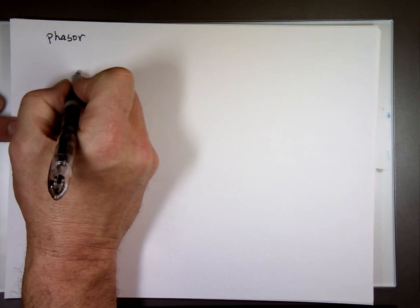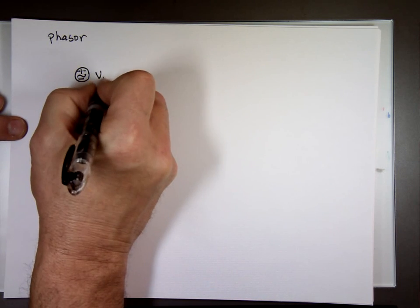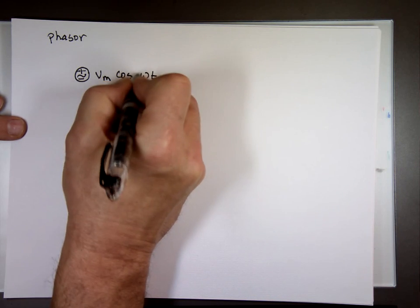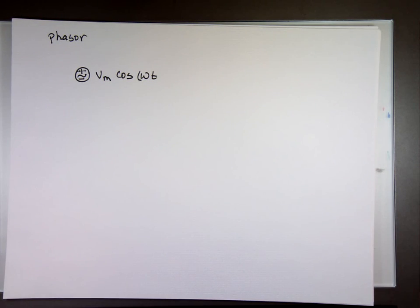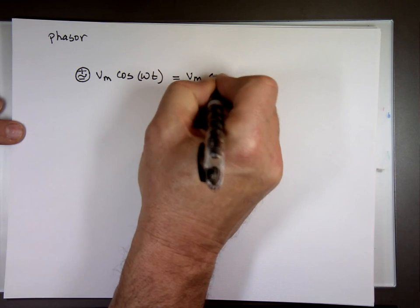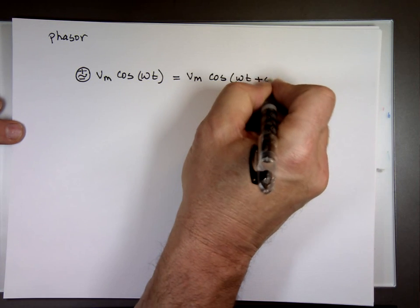As I said, phasor is a nice way to solve a circuit problem that has a sine or cosine for a source. So if my source is, for example, here we go, my source is an AC source that has some value Vm cos(ωt). Well, if it's ωt, that means you can write that Vm cos(ωt+0°), there is no phase shift, so it's really zero phase shift.